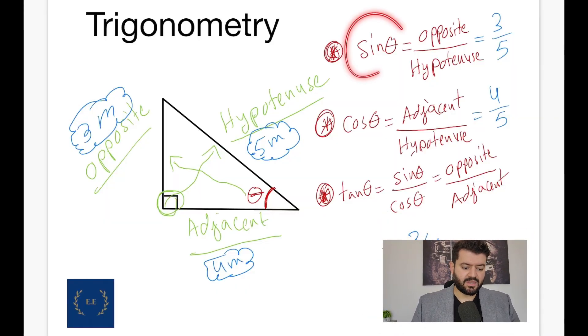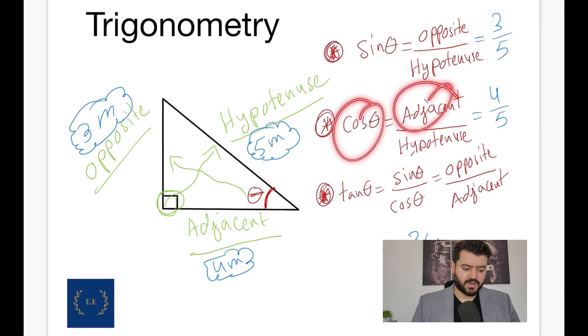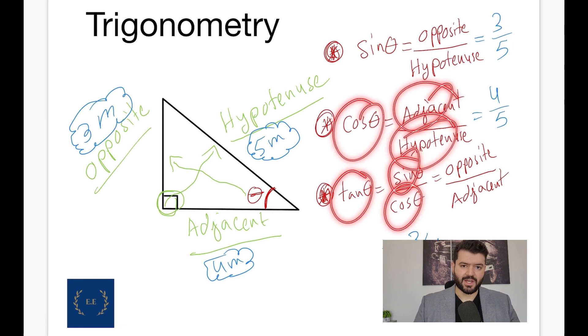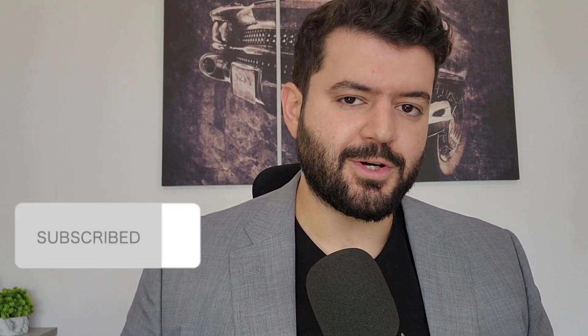Now, a quick recap. We said sine of the angle is opposite over hypotenuse. Cosine is adjacent over hypotenuse. Tangent is sine over cosine. So, make sure at this current point, you smash the subscribe button, and I'll see you in the upcoming video.